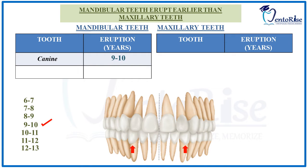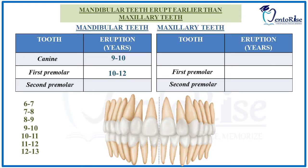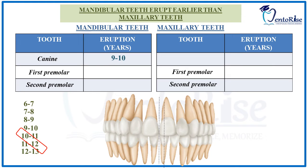However, the maxillary canine does not erupt immediately after the mandibular canine — there is a time lag. After the mandibular canine, the mandibular first premolar will erupt in the next age group of 10 to 12 years. Memorizing the age of eruption of premolars is a little tricky because all four premolars erupt between the age of 10 to 12 years. For the mandibular premolars, we have 12 in common: the mandibular first premolar erupts between 10 to 12 years and the second premolar between 11 to 12 years.